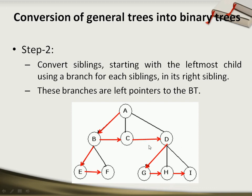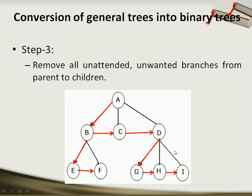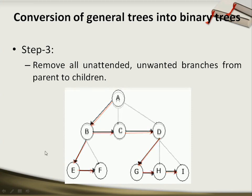Then in the next step, we will remove all the unwanted branches from the parent to children. For example, A to D we have not followed, B to F not followed, D to H, D to I not followed. So we have to remove those unwanted branches. After removing the branches, the tree will look like this.